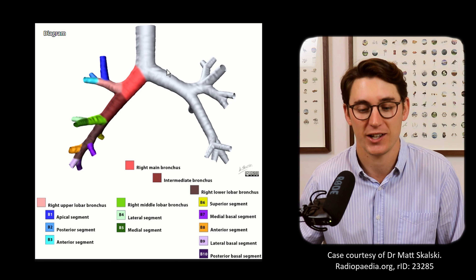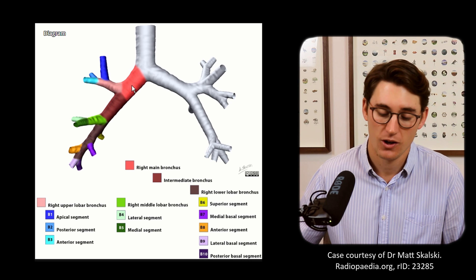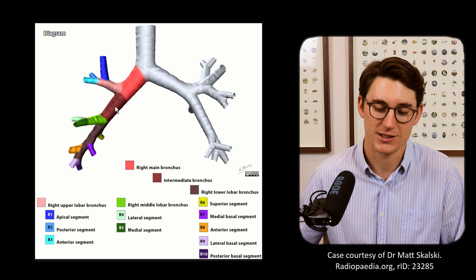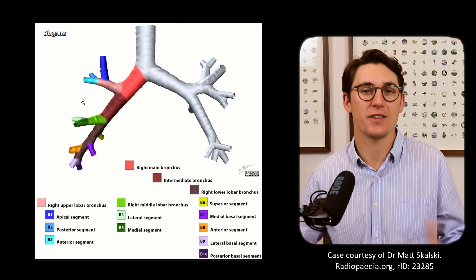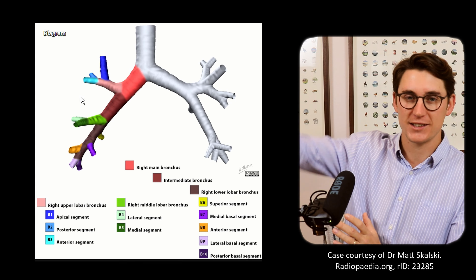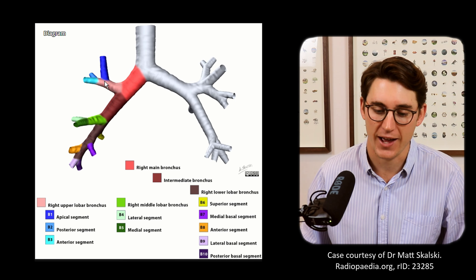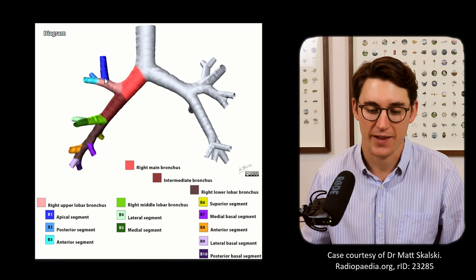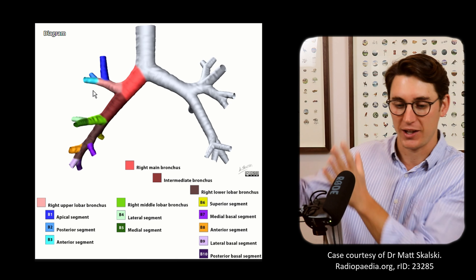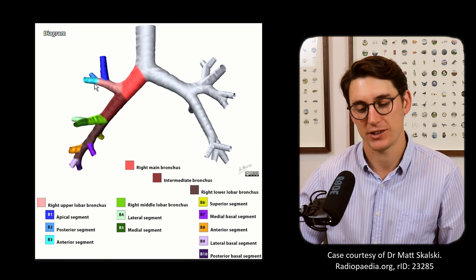We can see the trachea coming down centrally, bifurcating into our right main bronchus and our left main bronchus. On the right side, the right main bronchus goes into our right upper lobe bronchus and our bronchus intermedius. The right upper lobe bronchus gives off three branches — best thought of spatially as a triangle: one arm going upward to the apical segment, and two going out laterally as the anterior and posterior segments.